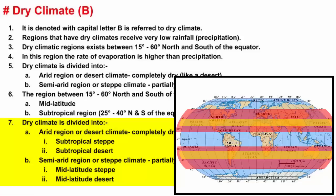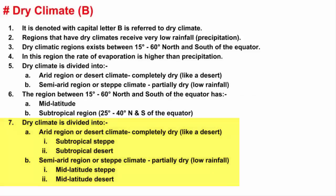Steppe means semi-arid region, and desert is a completely arid region. In the next video, we'll learn about subtropical steppe.